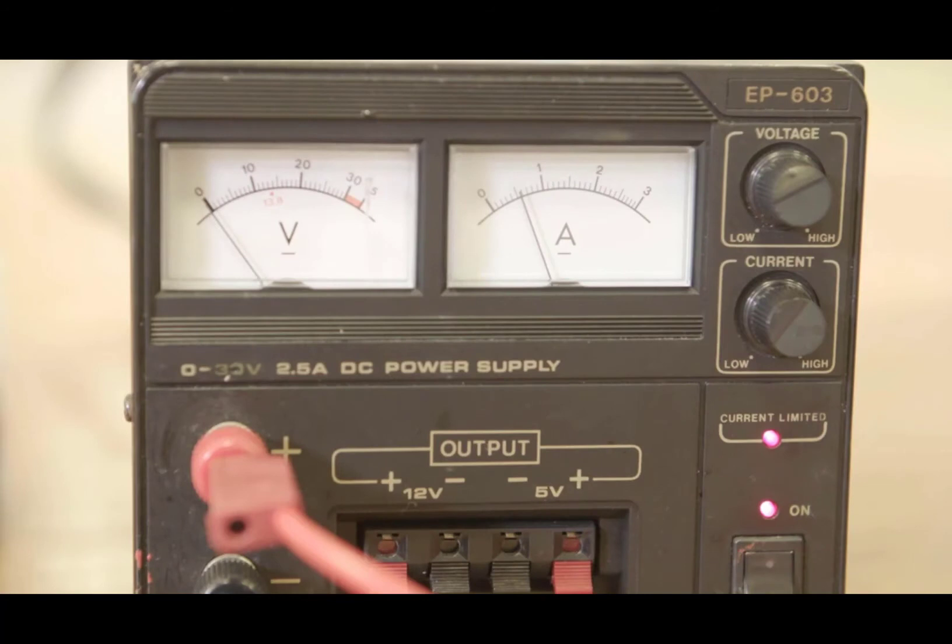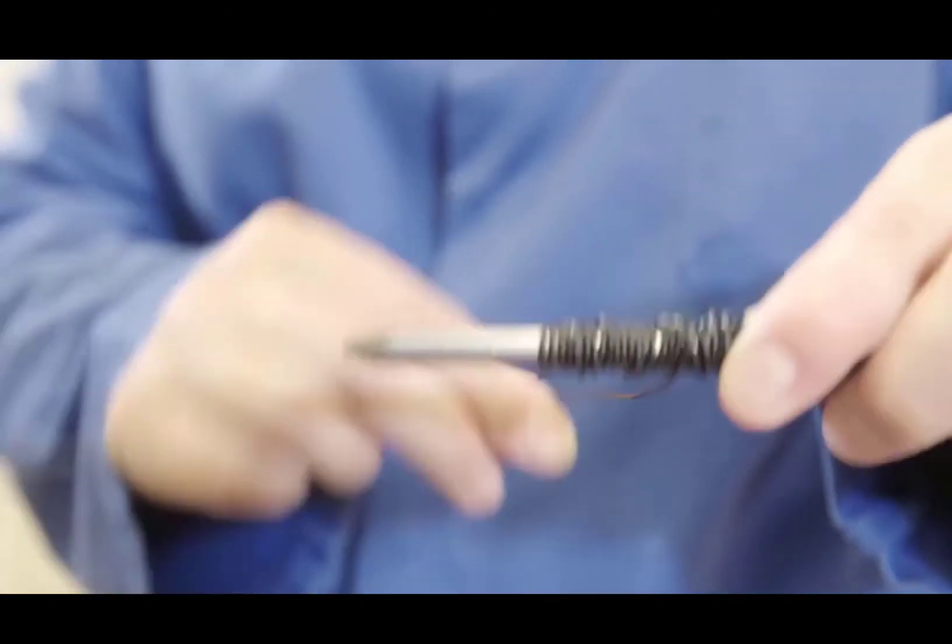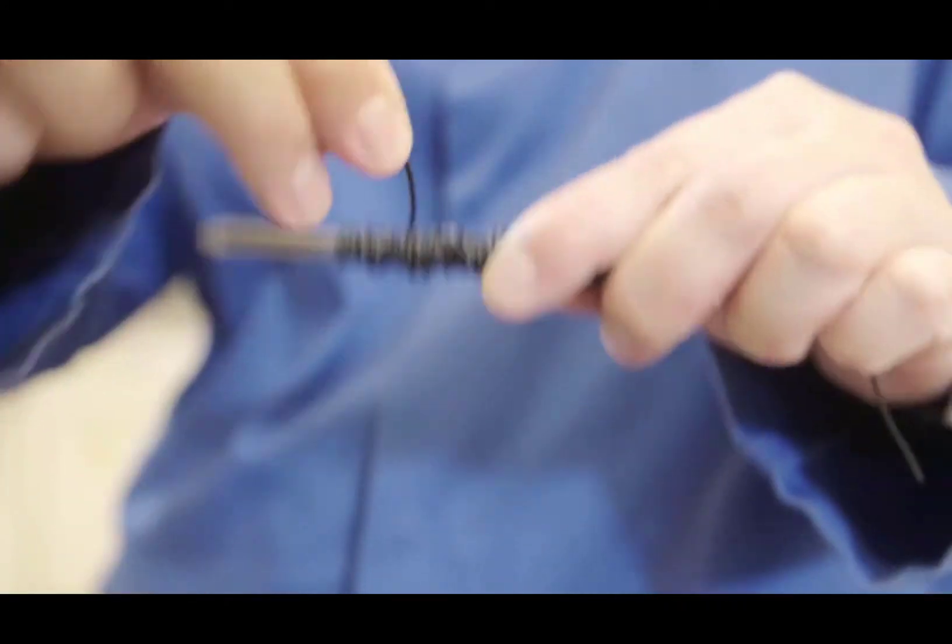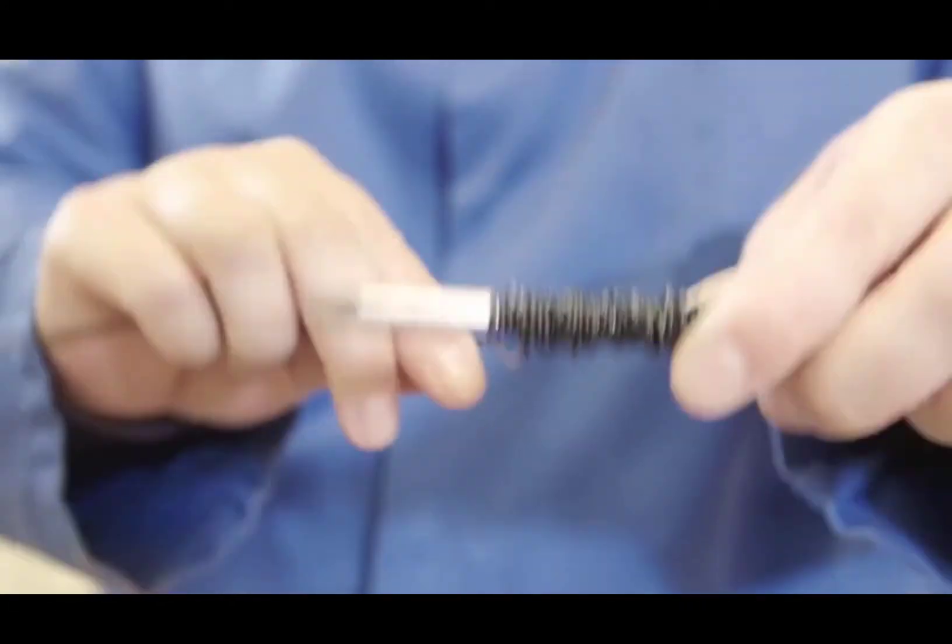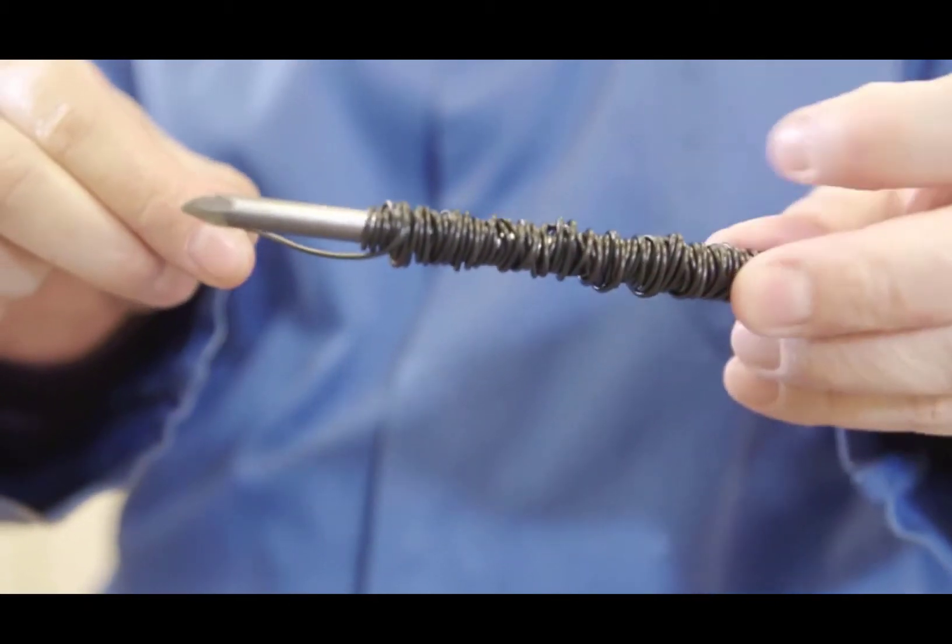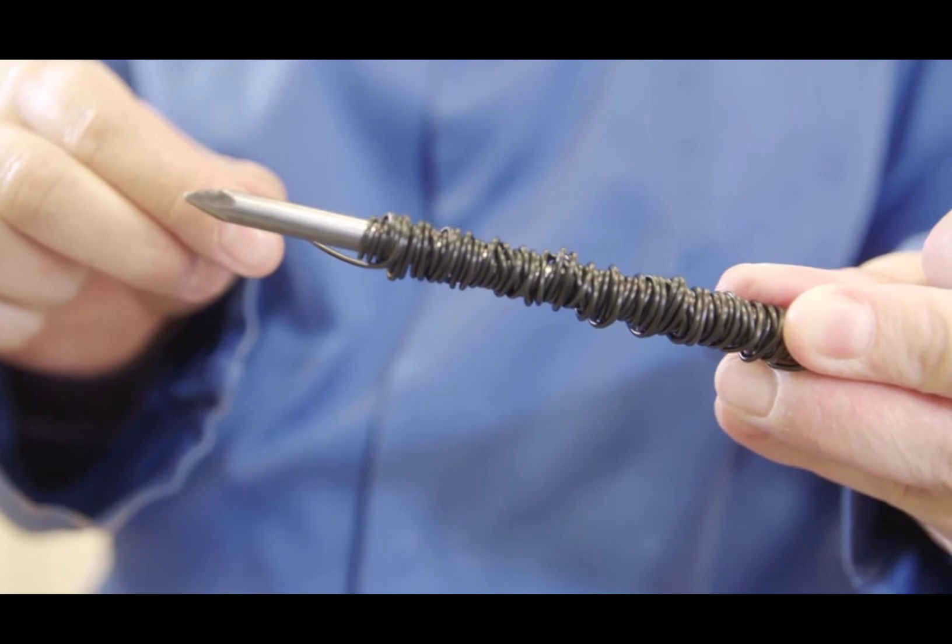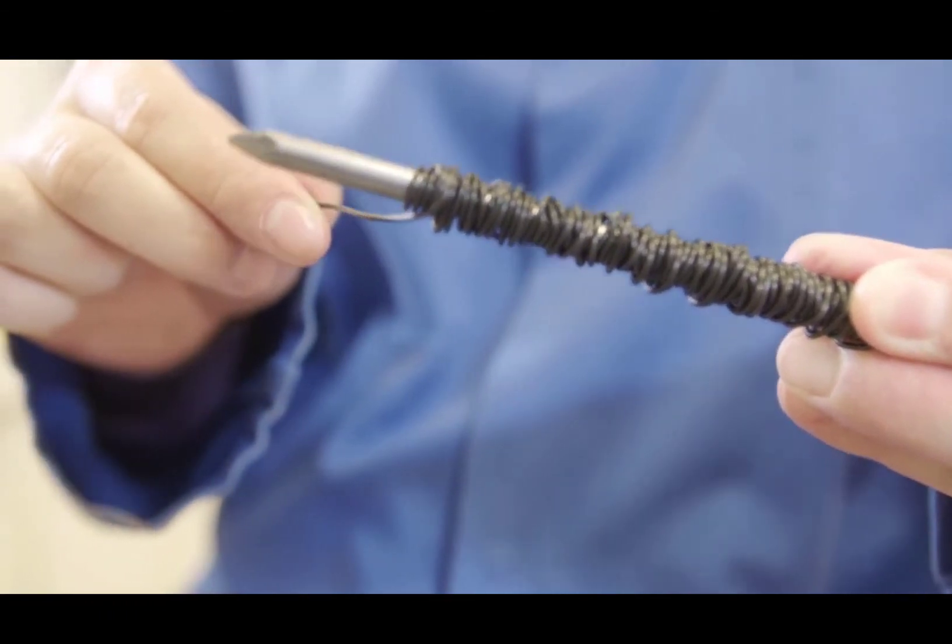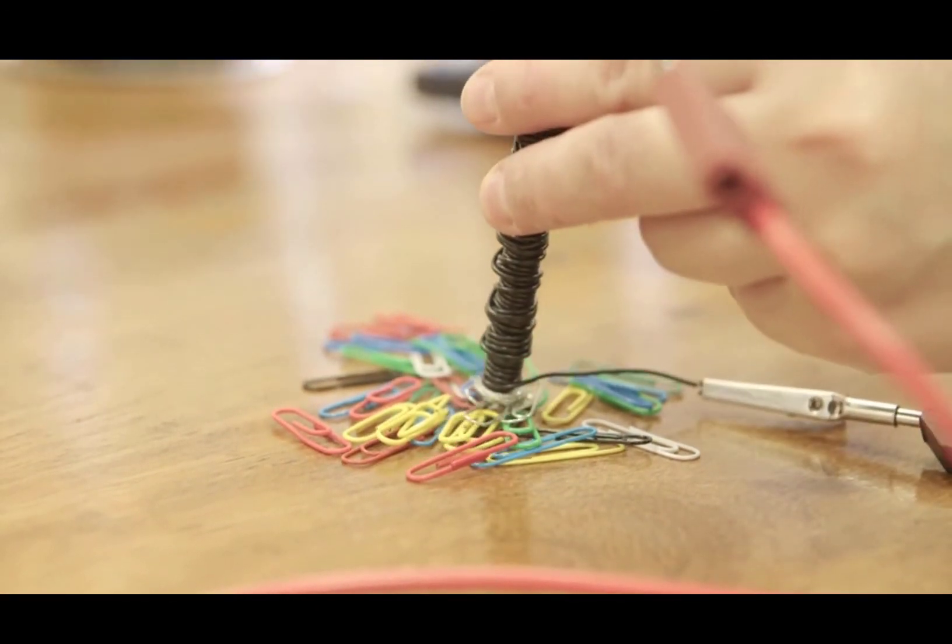The current has been returned to its original setting. The next variable being altered is the number of turns of the wire. The original number of turns of the wire was 50 and the control showed that it picked up one paper clip. Now 50 more turns of the wire have been added. The electromagnet is turned on and the number of paper clips collected is counted.